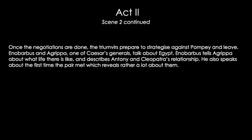When Enobarbus talks about Antony and Cleopatra's relationship, that is worth paying attention to, because he's giving us insight into who they are and how they operate. It's Shakespeare almost telling us: don't worry, Antony hasn't gone off Cleopatra — his right-hand man is absolutely convinced it's not going to last. He says: 'When she first met Mark Antony, she pursed up his heart' — in other words, it was love at first sight for Antony. She stole his heart from the moment they first met, and you'll see that all the way to the end of the play.